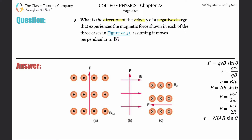We have to apply right-hand rule number one, but be careful — we're dealing with a negative charge. The thumb represents the velocity, the four fingers represent the magnetic field, and the back of the hand represents the force.